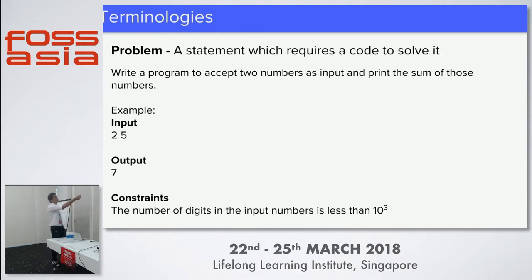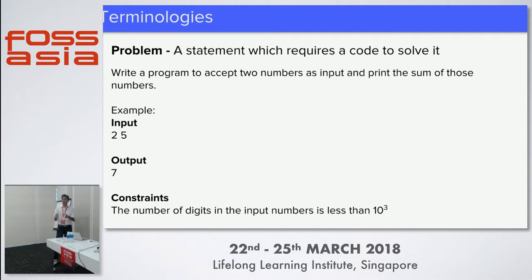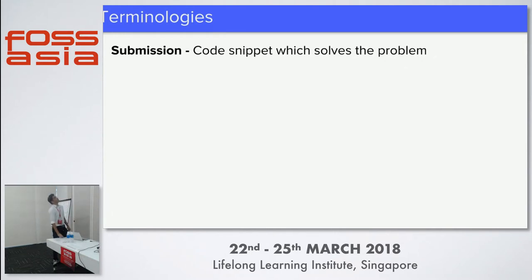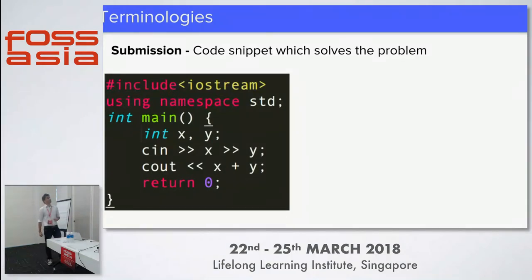There is something called a constraint to the problem. Constraint is basically what the input numbers would be like. In our case, we're having that all numbers in the input have digit size 1000 - a number would have exactly 1000 digits. Then the submission. Submission is basically the actual code snippet which would solve the problem. So a C++ program would declare two variables, take x and y, and just print the output.